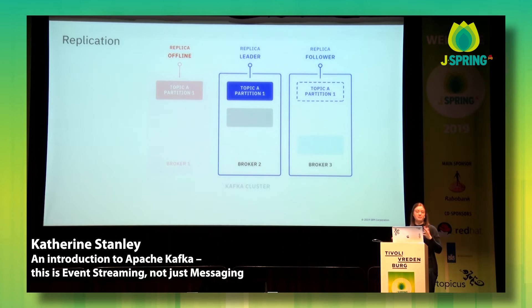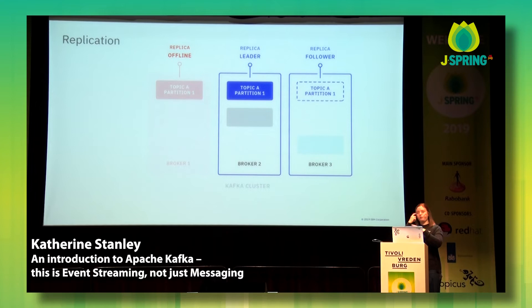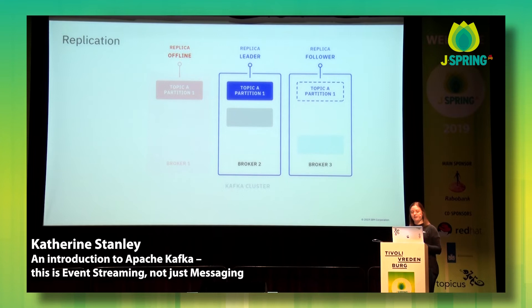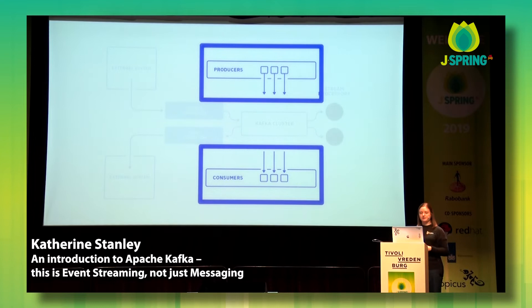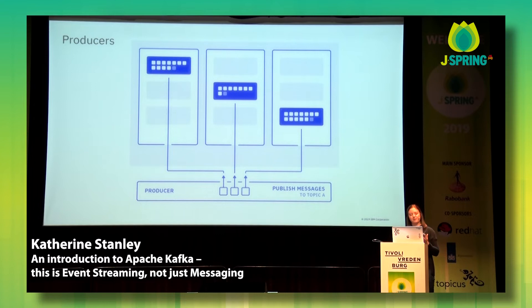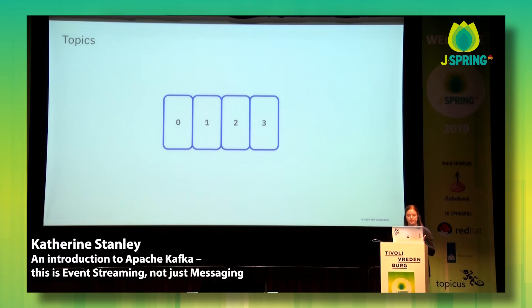So we've got high scaling and high availability — this all comes with the way Kafka works with brokers, topics, and partitions. Next I'm going to look at producers and consumers. This is the name we give to applications that send events into Kafka and pull from Kafka. Producers, as their name might suggest, produce events into Kafka. To understand how producers work and how you want to set up your producer applications, we have to look a little bit closer at what an event record looks like in Kafka.